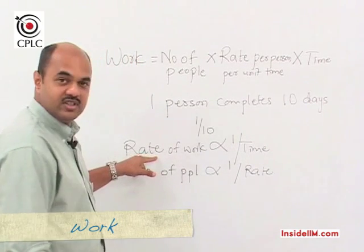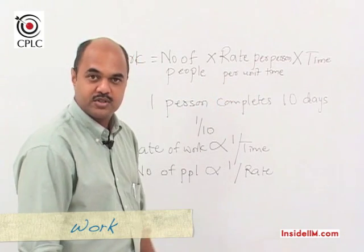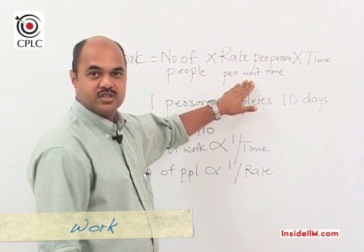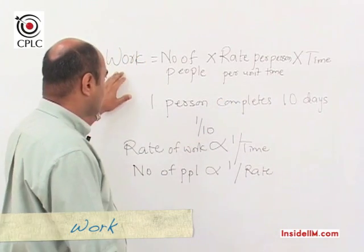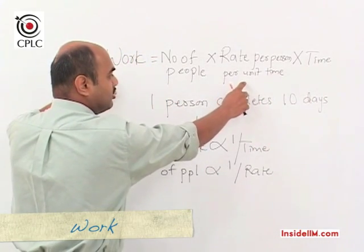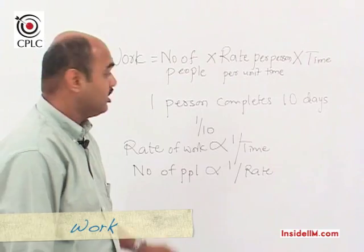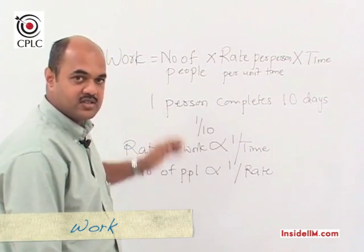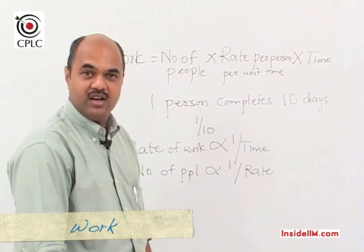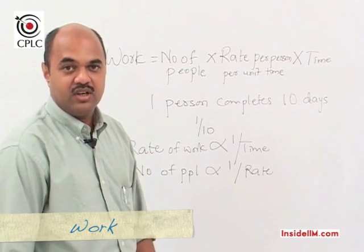If we relate work to be done and the rate per person — with number of people and time remaining the same — and if the rate per person changes in the ratio a:b, then the work done will also change in the ratio a:b, because these two have a direct variation. So from the one statement work = people × rate × time, with any two of the four parameters constant, we can figure out the relationship between the other two.